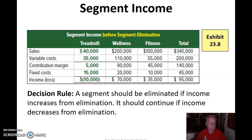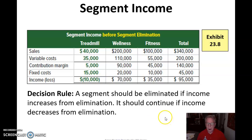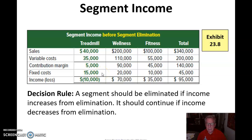Hi everybody, and welcome back to video number two in chapter 23. Just to review the last slide here, our treadmill was losing $10,000. And what we want to do is see if that segment should be eliminated. I'm looking first at this contribution margin of $5,000, and on the surface it looks like maybe we should keep it. But the other piece is what part of this fixed costs would actually go away, and which ones would actually stay?